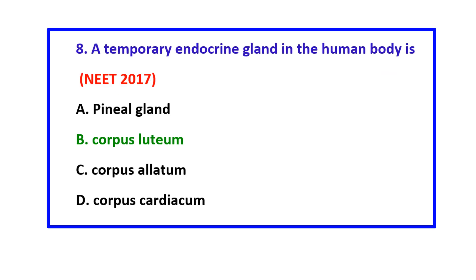Question: A temporary endocrine gland in the human body is — the correct answer is corpus luteum.